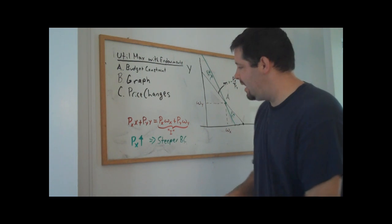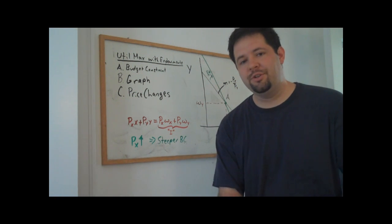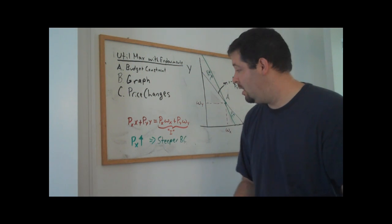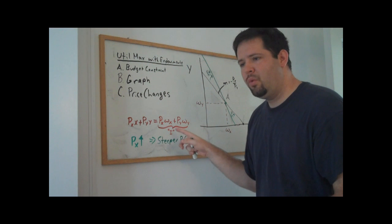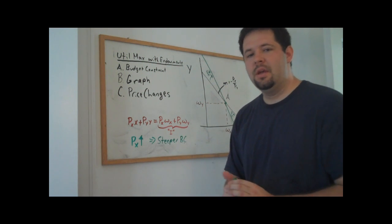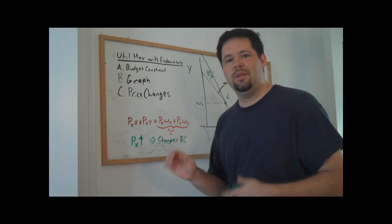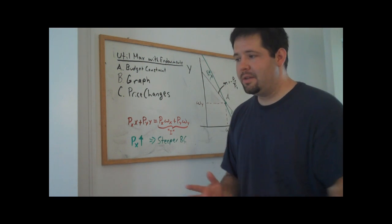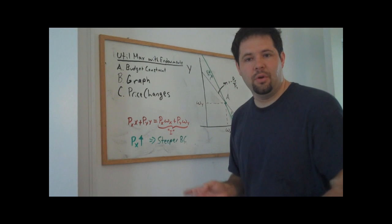And this is going to allow us to have a much richer description of consumer behavior. In particular, we like the fact that with these endowment budget constraints that consumers can actually pick their level of income by exerting effort in one direction or another. And so this is actually a richer depiction of the world than just taking an income as given.